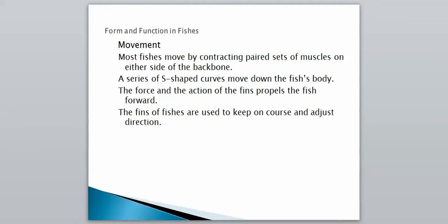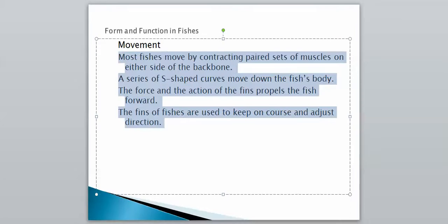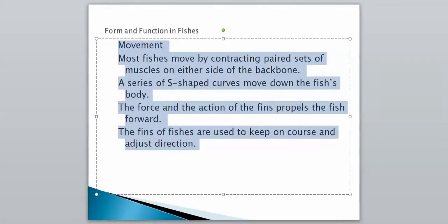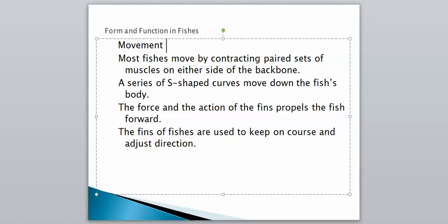Most fishes move by contracting paired sets of muscles on either side of their backbone, creating a series of S-shaped curves that move down across their body. The force and action of these fins, after they contract the muscles, will propel the fish forward. The fins are also used to keep on course and adjust direction. Having paired fins gives them more control — like having a paddle on each side of a canoe, you go straight and move a lot faster. These curved muscles along the side of their body, when contracted, move their fins and help them be very successful swimmers.